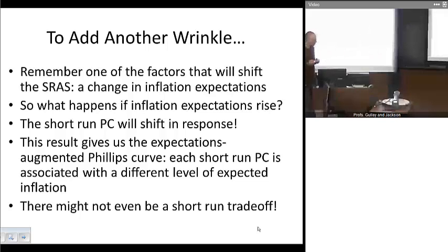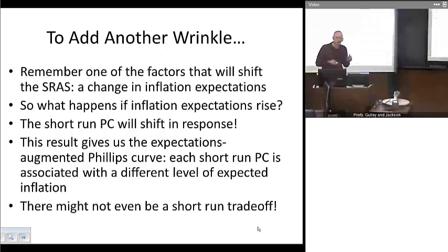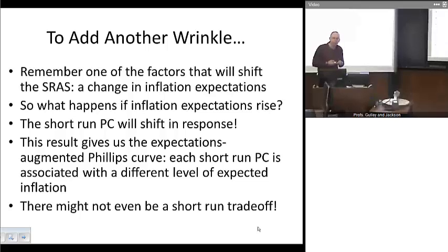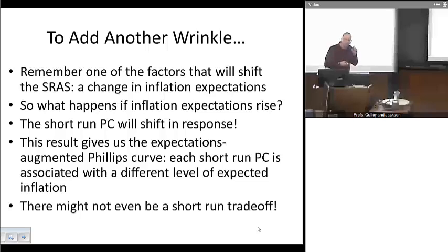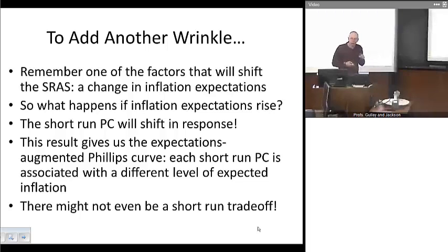Now let's add another wrinkle. Our previous analysis suggested that, at least in the short run, policymakers might be able to get a temporary tradeoff between inflation and output — it won't last in the long run, but temporarily. What happens if inflation expectations rise? One of the things that shifts the short-run supply curve is inflation expectations. When inflation expectations rise, the short-run Phillips curve will shift right away. We'll have what we're going to call the expectations-augmented Phillips curve — each short-run Phillips curve has its own associated level of expected inflation. There might not even be a short-run tradeoff between inflation and unemployment.